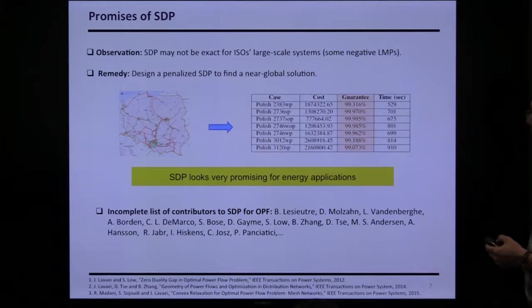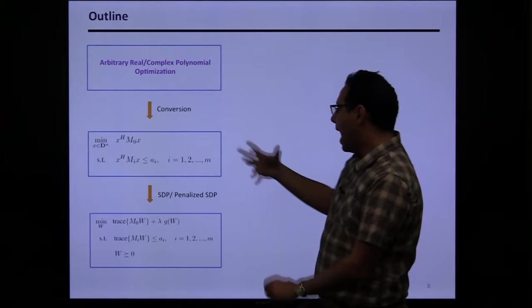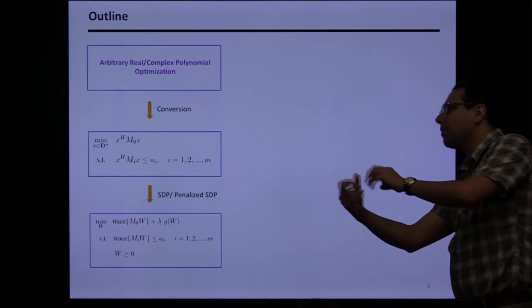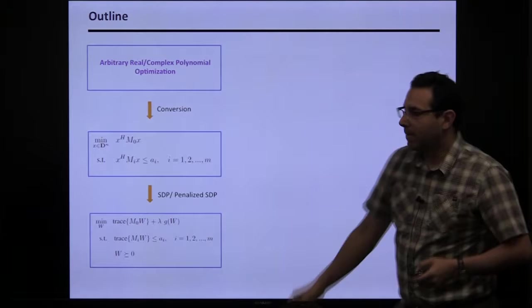Going back to the original story: polynomial optimization can be converted to quadratic optimization, then we use SDP or penalized SDP. We will address a number of questions. Many control problems can also be written this way — possibly as infinite-dimensional or Lyapunov equations — and we can use a similar idea. But there are fundamental questions we need to answer.